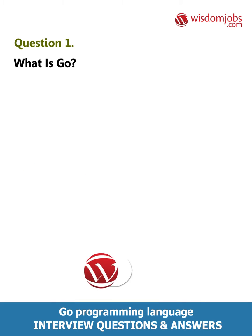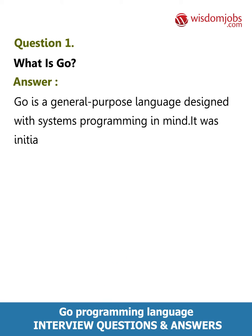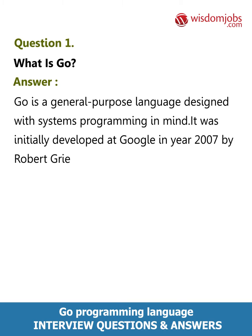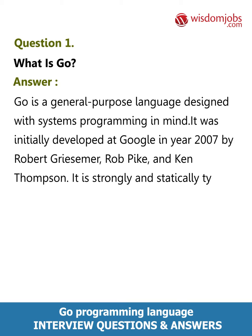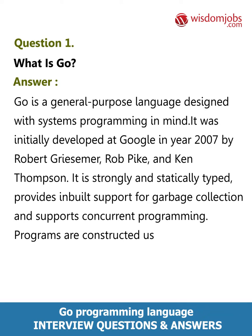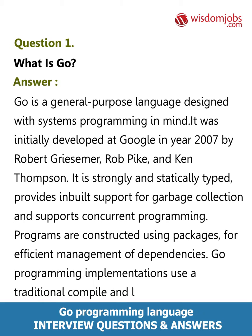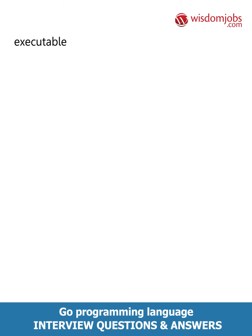Question 1: What is Go? Answer: Go is a general purpose language designed with systems programming in mind. It was initially developed at Google in 2007 by Robert Griesemer, Rob Pike, and Ken Thompson. It is strongly and statically typed, provides inbuilt support for garbage collection, and supports concurrent programming. Programs are constructed using packages for efficient management of dependencies. Go uses a traditional compile and link model to generate executable binaries.